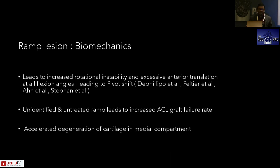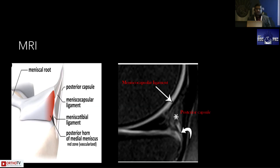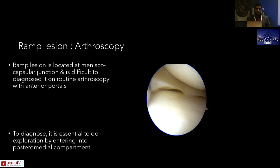Once you understand the mechanics, you can judge how to do a repair. A ramp lesion leads to increased rotational instability, excessive translation, and increased graft failure rate — which is why an unstable ramp needs repair. It has a high incidence ranging from 15 to 30 percent, with certain risk factors including bone contusion at the posteromedial tibia. On MRI, you can see irregular fluid signal intensity and posteromedial tibial contusion, which gives you the idea that there is a ramp lesion.